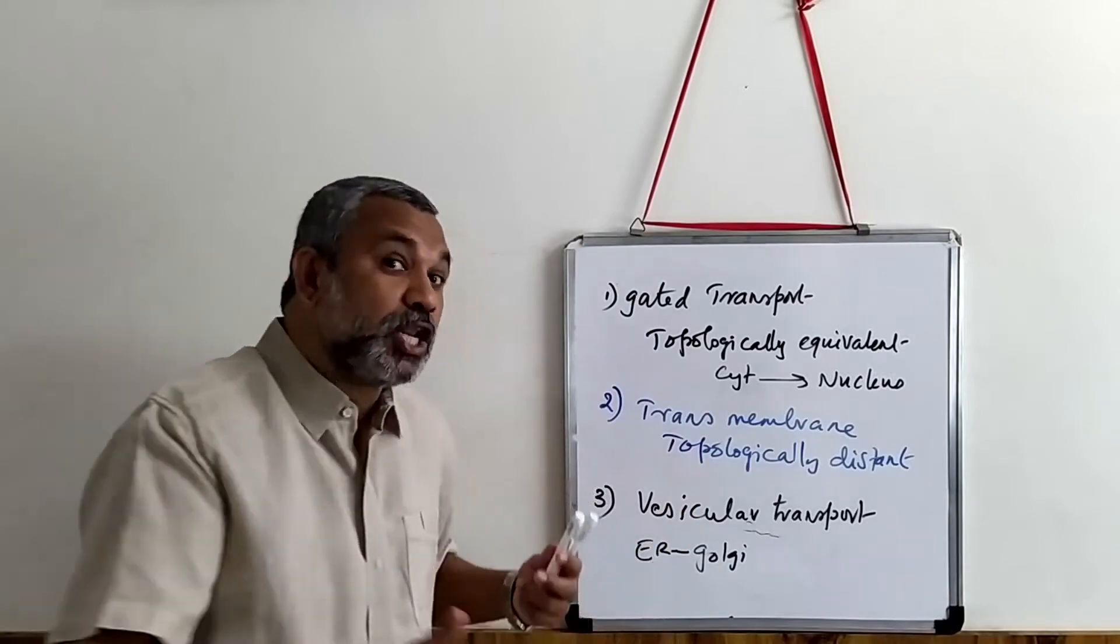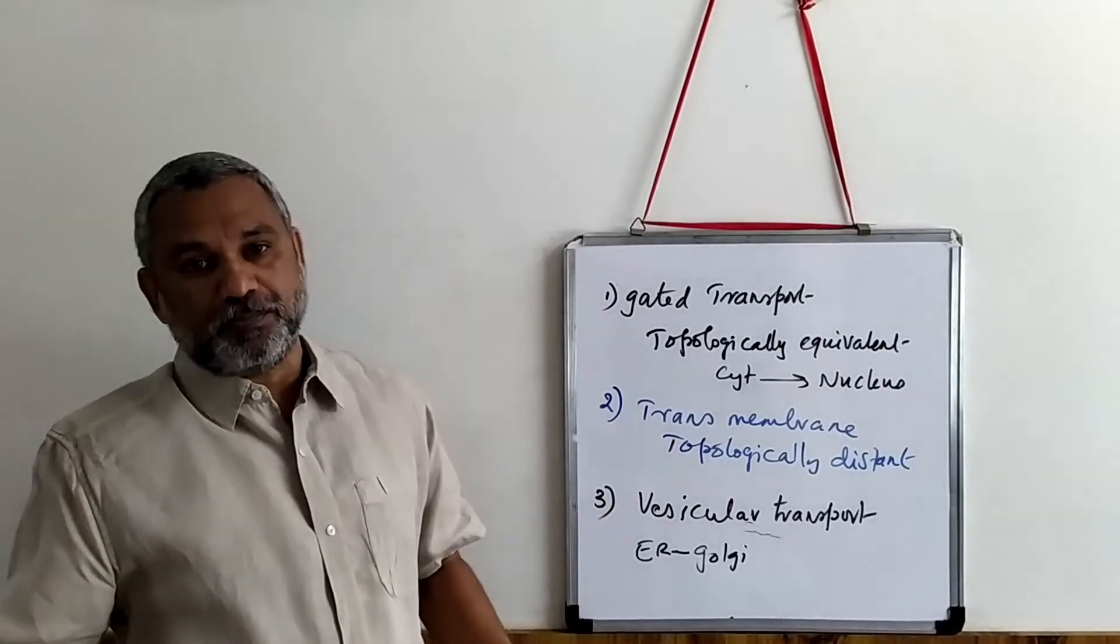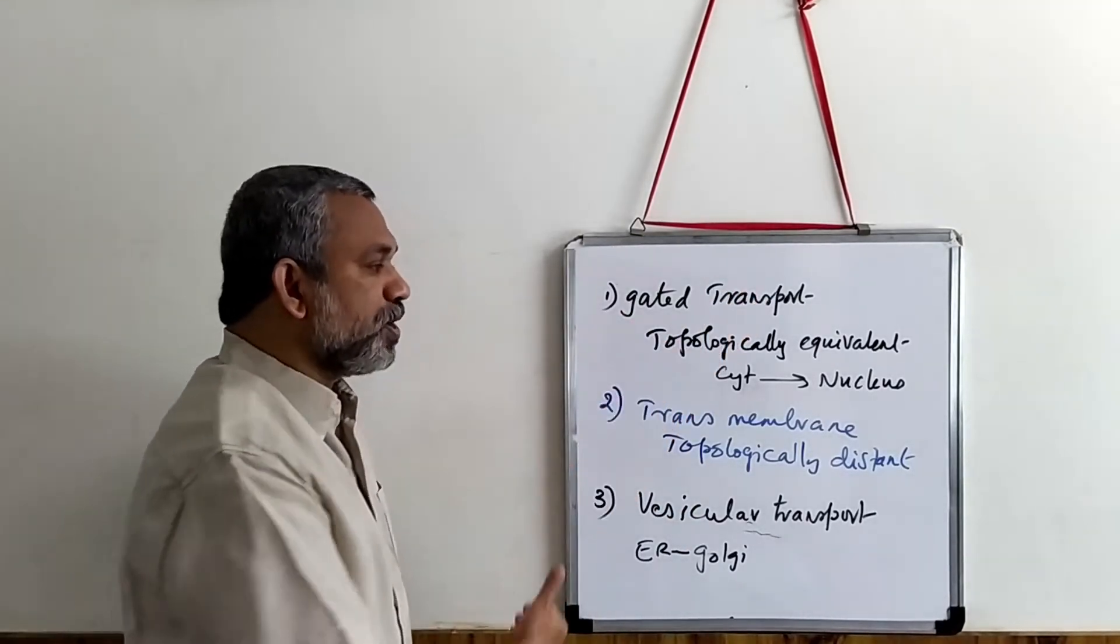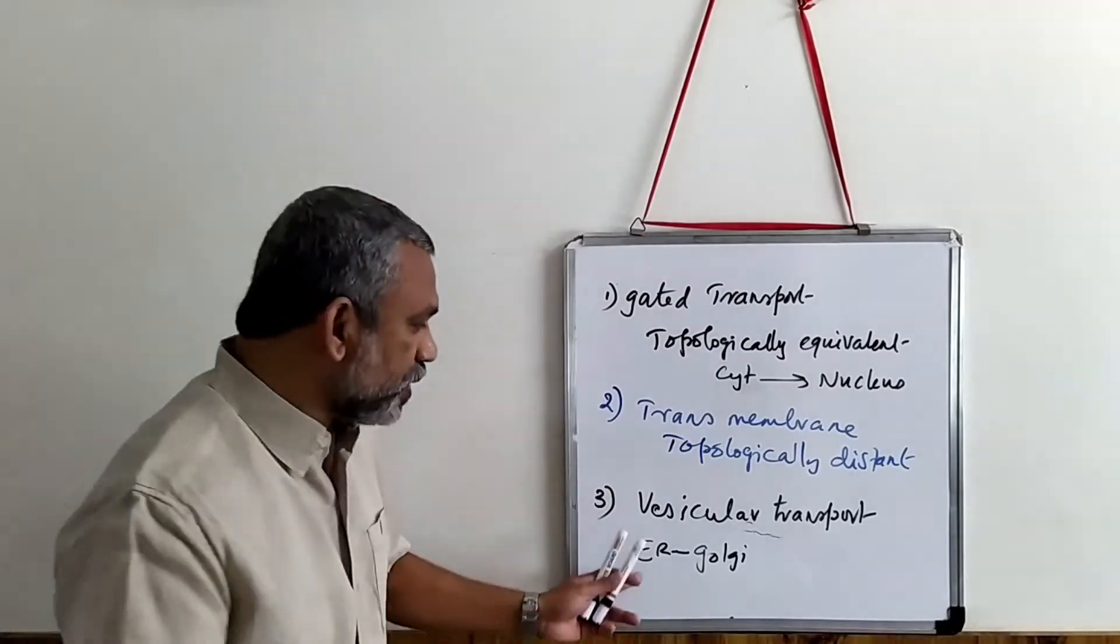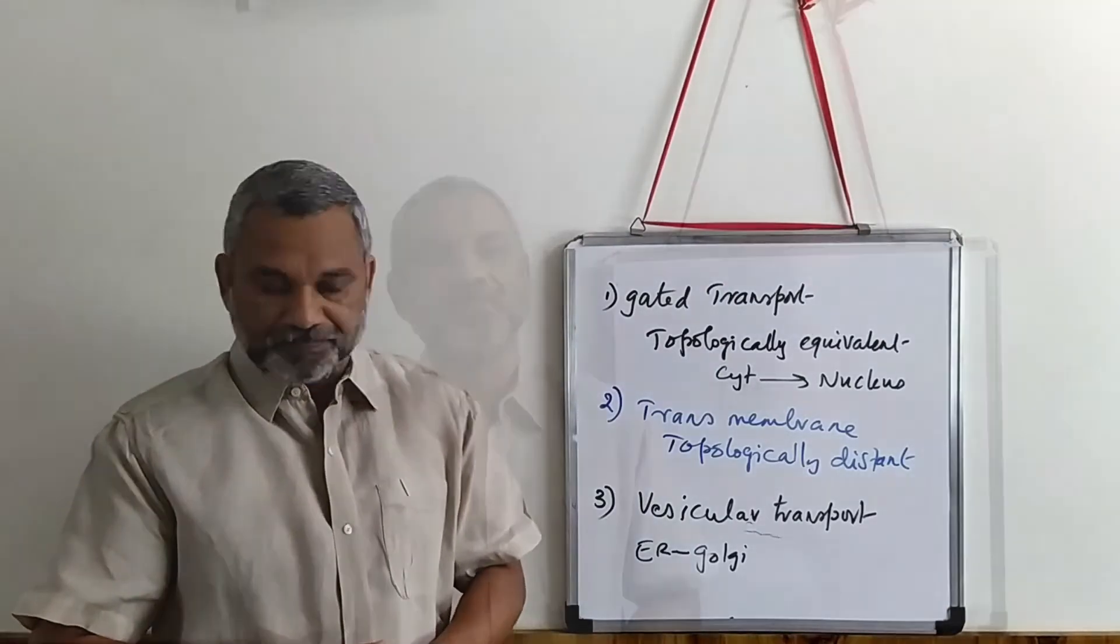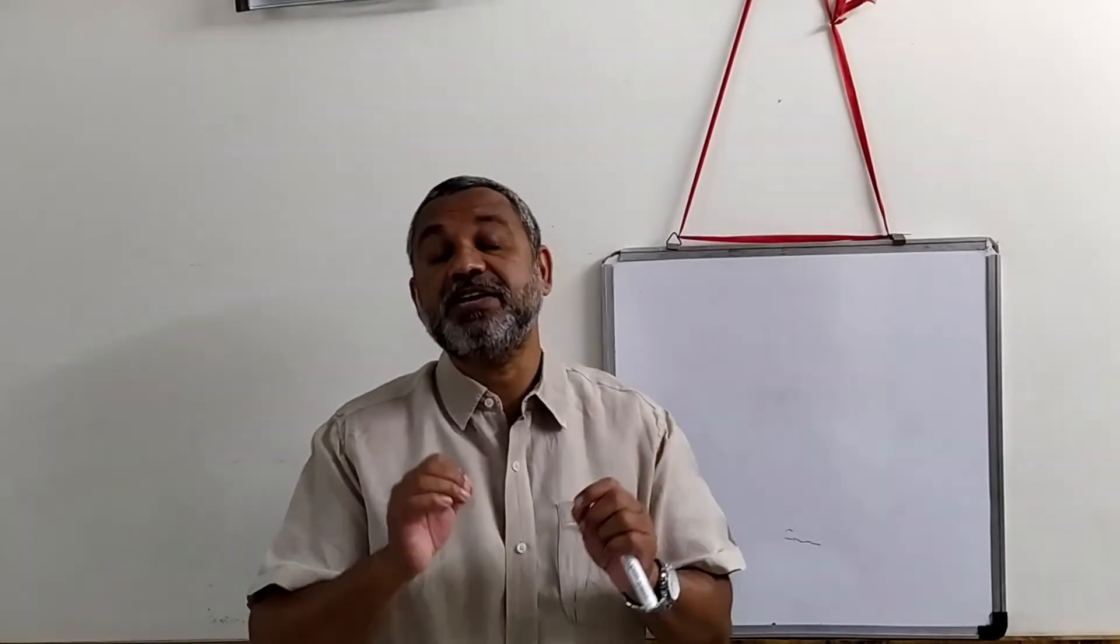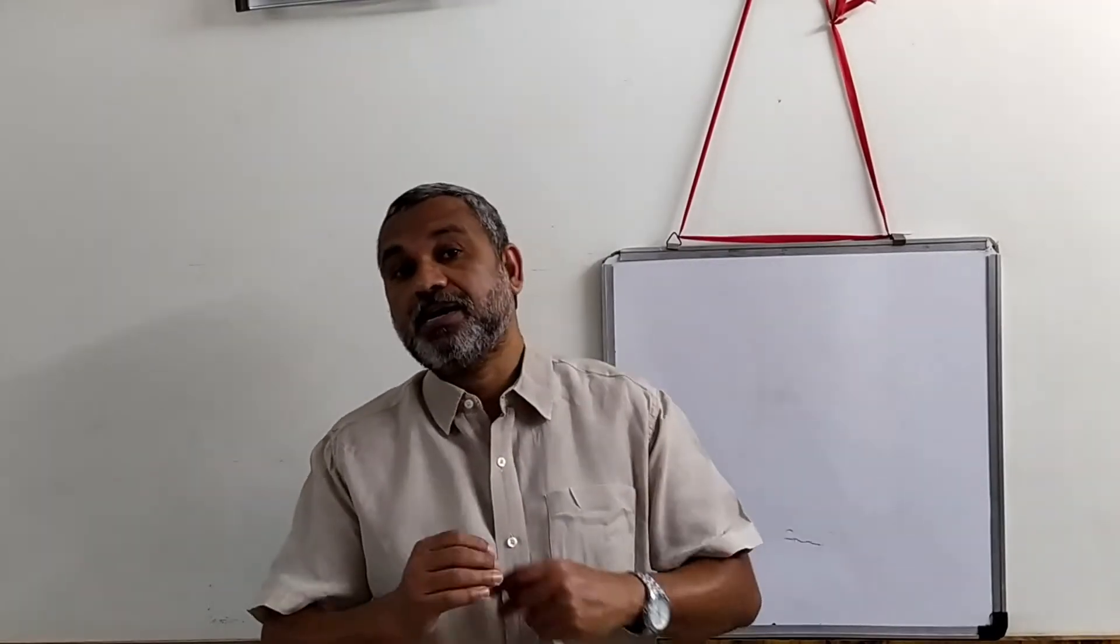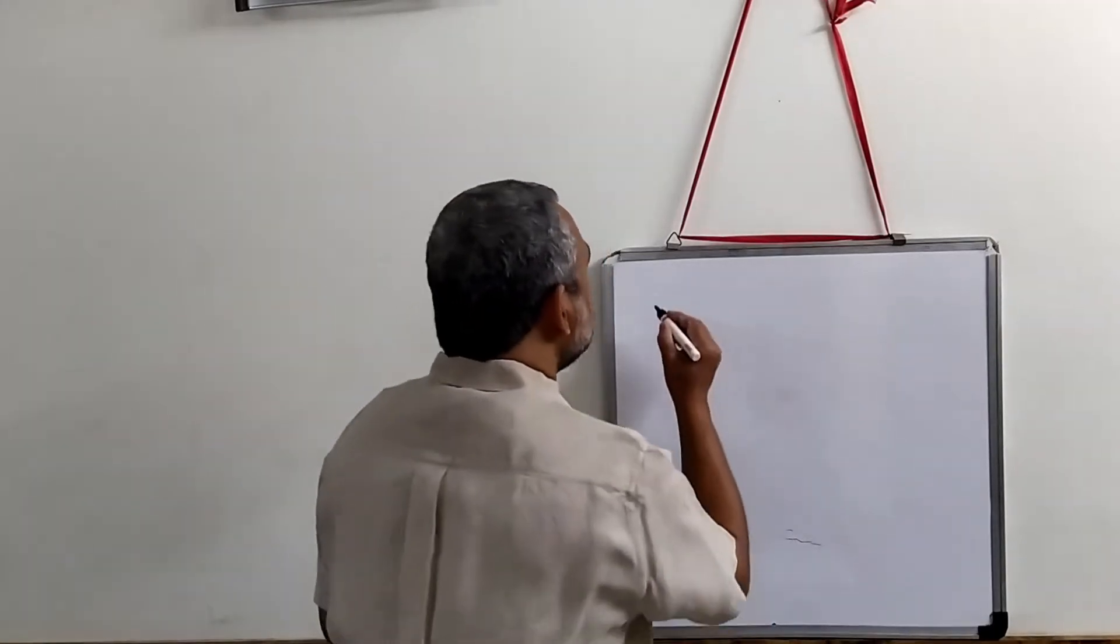We can see, therefore, there are three different ways of transporting proteins: the gated transport, the transmembrane transport, and the vesicular transport. Now, each of these three different types of mechanisms of transport are directed by sorting signals.